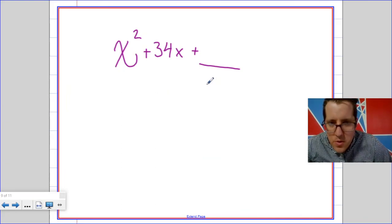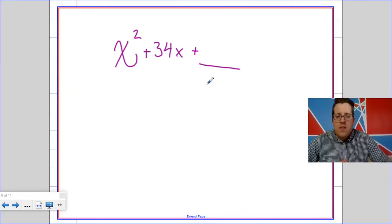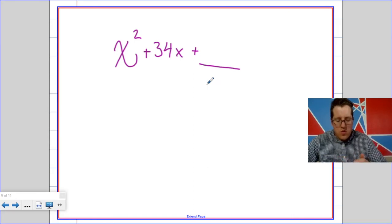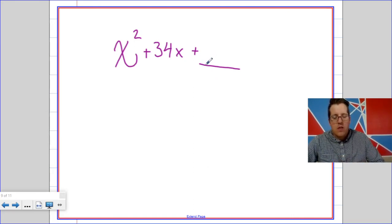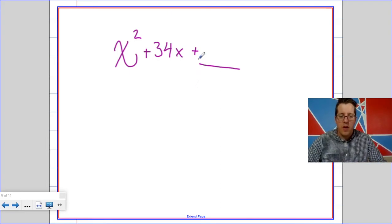So, the question for you to ponder as we go into class is, what constant term would I need to put in the blank in order to make this a perfect square trinomial? If you can figure that out, you've got the entire thing unlocked.